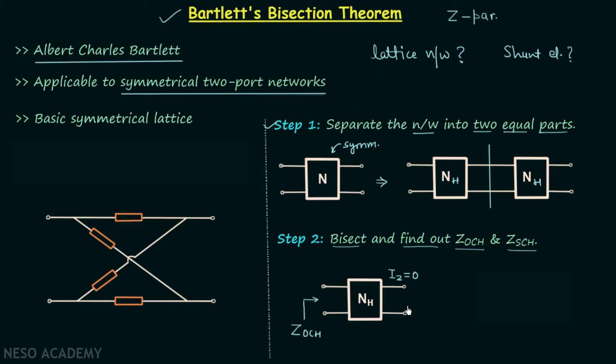Because it is open circuit driving point impedance of the half network. After this we will short circuit the output port, which means voltage V2 equals zero. Again we calculate the impedance between these two terminals and this time the impedance is known as Z SCH, short circuit driving point impedance of the half network.